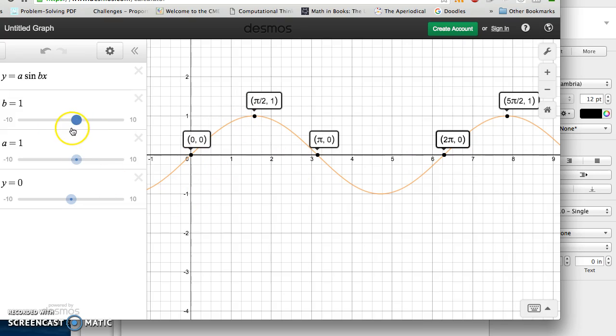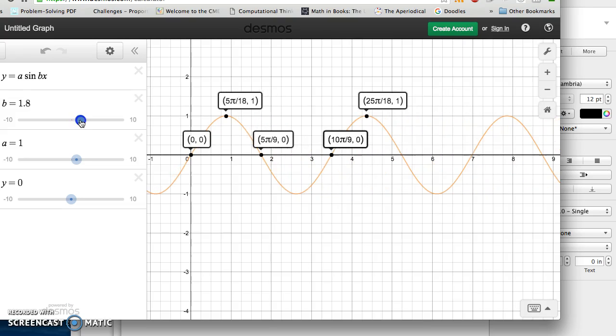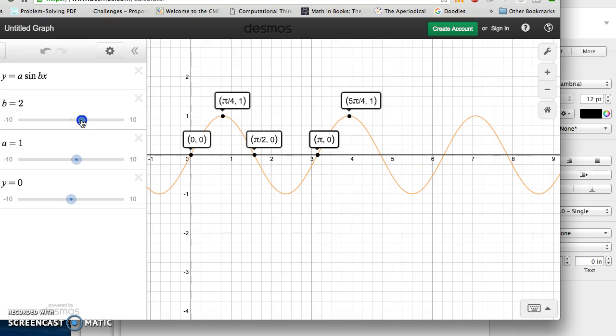That means that b changes the frequency, excuse me, the period. Frequency though is another aspect of period that we'll talk about. One way of looking at it is, hopefully by now you've already studied how when b gets bigger, the period gets smaller. I just doubled b. And now my function hill, valley, and now it's pi. It was 2pi, now it's pi, so it shrunk by half. b doubled and the period shrunk by half.